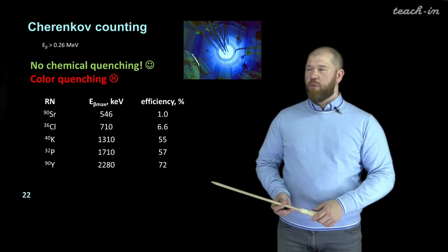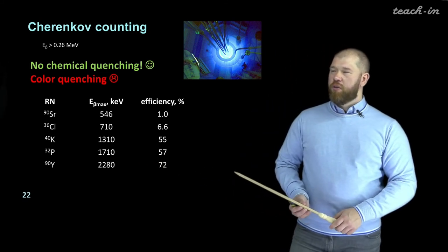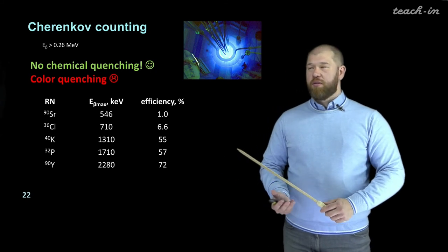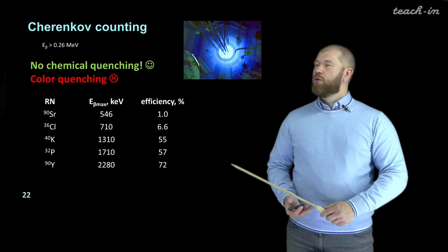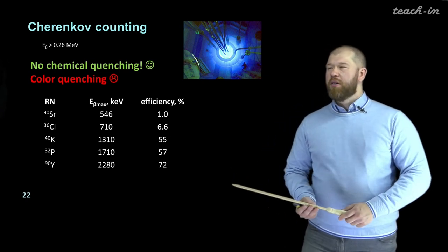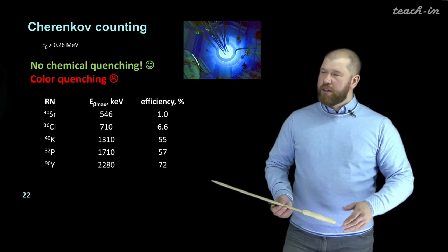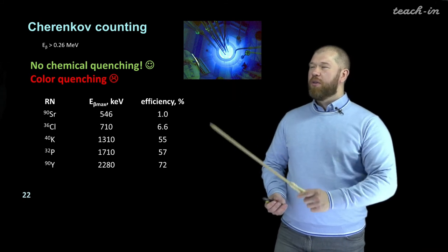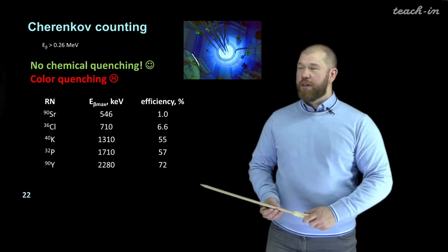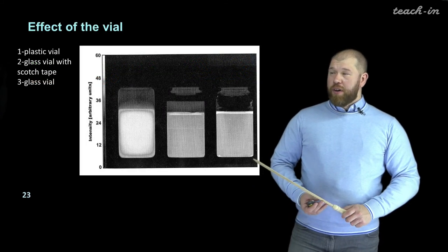For potassium-40, a naturally occurring radionuclide, the efficiency of Cherenkov radiation is quite high. Since there is a lot of potassium in the seas and oceans, in the deep ocean there is not complete darkness but a very low intensity visible light — the blue Cherenkov radiation — produced by potassium-40. So there is no complete darkness in the deep ocean.